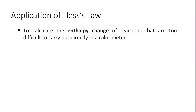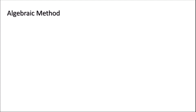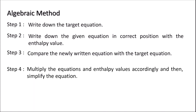The application of Hess's Law is to calculate the enthalpy change of reactions that are too difficult to carry out directly in a calorimeter. We are going to use two methods: the first one is the algebraic method and the second one is the energy cycle method. For the algebraic method, there are five steps you should know.